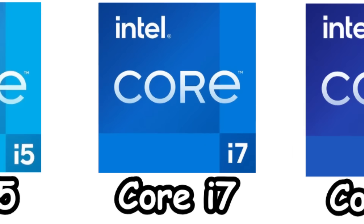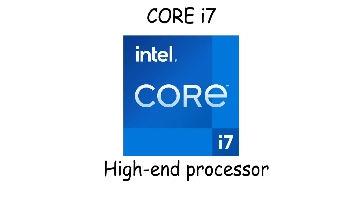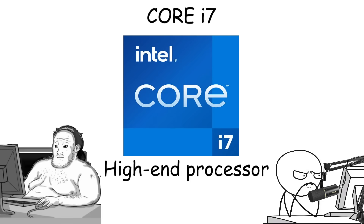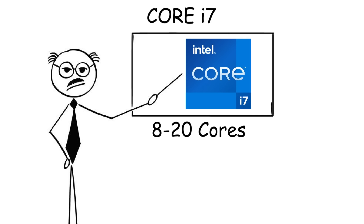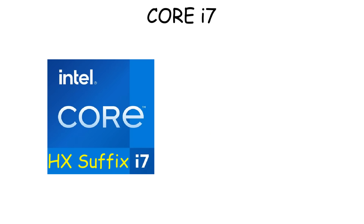Intel Core i7 is a high-performance processor for people like content creators who need to run heavy programs and multitask at the same time. So if you can play a game on high settings with Core i5, with Core i7 you can play your game at high settings while recording your gameplay with OBS Studio, opening Discord, and opening a lot of Chrome tabs without lagging. This is all possible because Core i7 has more cores, usually around 8 to 20 cores.